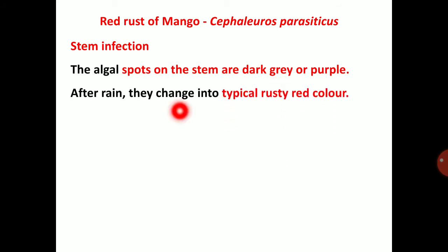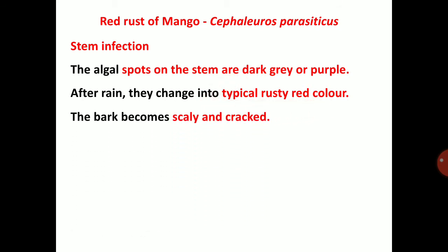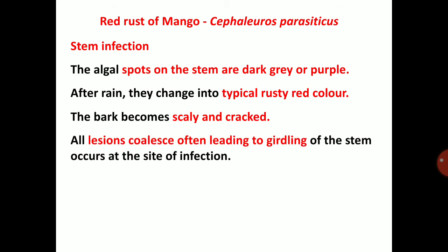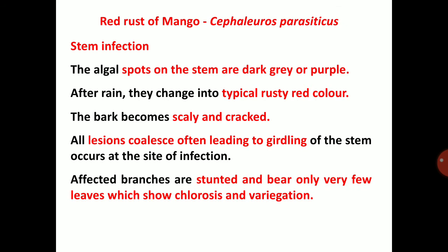After rain, the stem spots change into typical rusty red color. The bark becomes scaly and cracked. All lesions coalesce, often leading to girdling of the stem at the site of infection. Affected branches are stunted and bear only very few leaves which show chlorosis and variegation.